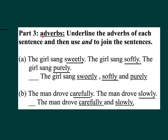Part three — Adverbs: Underline the adverbs of each sentence and then use AND to join the sentences. A: 'The girl sang swiftly, softly, and purely.' B: 'The man drove carefully and slowly.'